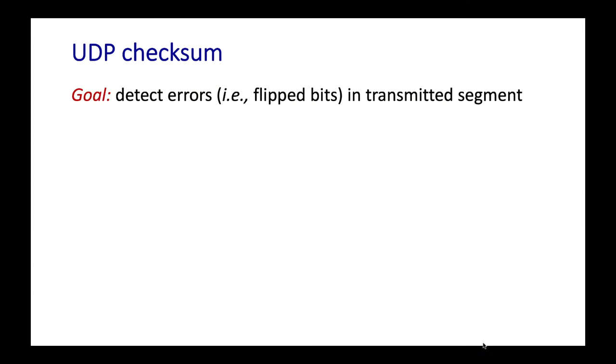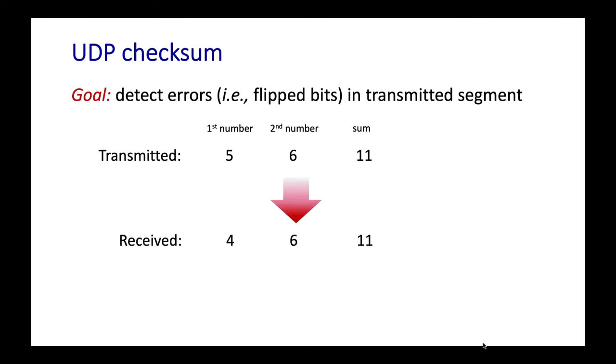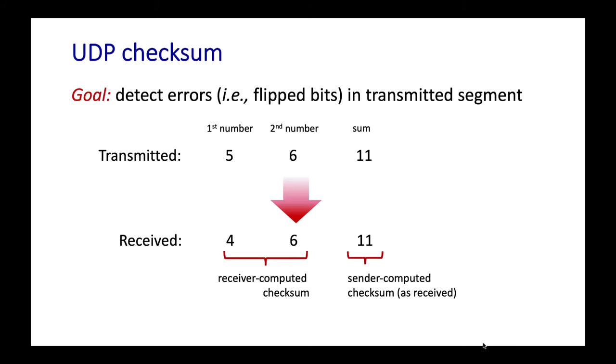One of the fields in the UDP header is the internet checksum field. Pay close attention here because this concept comes back when we look at TCP and IP. The role of the UDP checksum is to detect errors — flipped bits — in the transmitted segment between sender and receiver. Imagine sending two numbers plus their sum. The receiver adds the two received numbers and checks whether that sum equals the received checksum. If they're different, there's a problem. For example, if you send 5, 6, and 11 but the receiver gets 4, 6, and 11, they compute 10, compare it to 11, and detect an error.